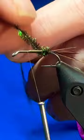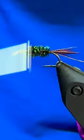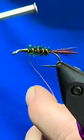I'll wrap the hurl up the shank to form a body, tie that off and tear out the extra. Next I'll take my wire and just counter rib that through for some protection and segmentation.